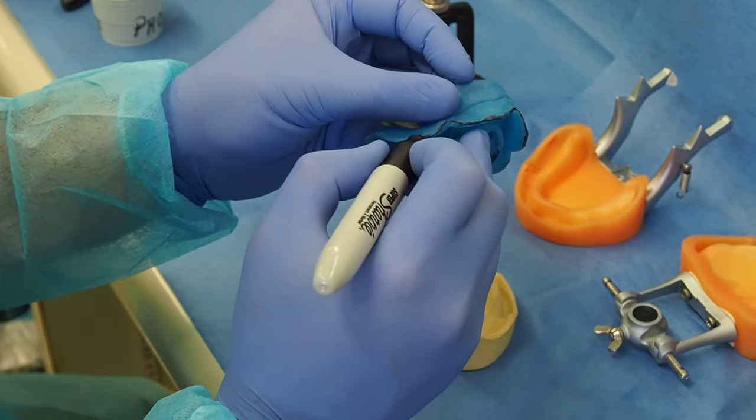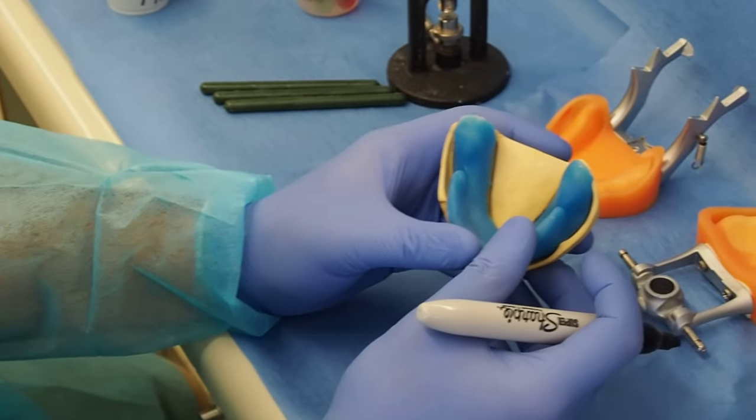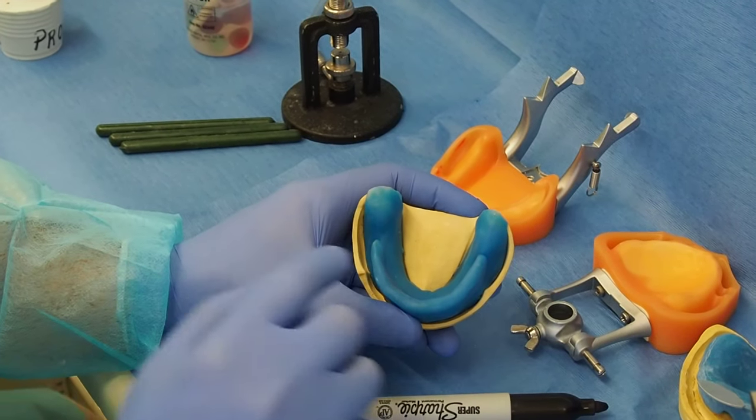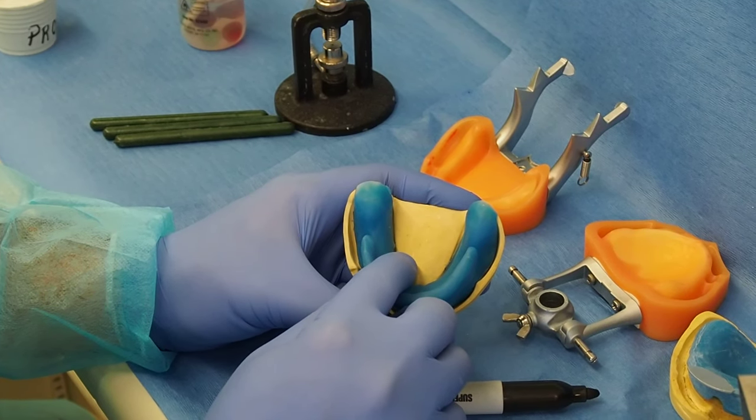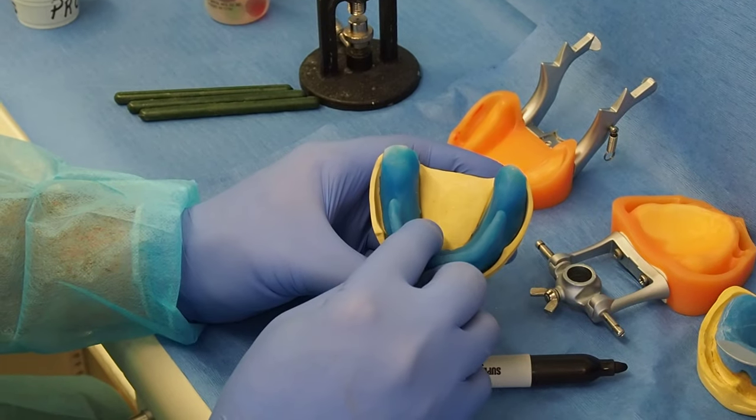And something very important, remember in the back we were talking about the posterior palatine seal. The posterior portion of it, this is completely overextended. If you see there, the retromolar pad.